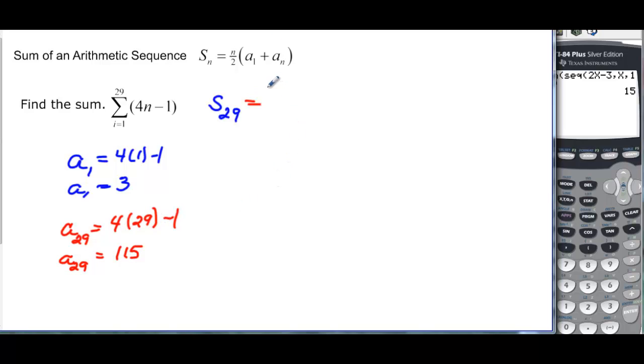So here we go. We have 29 terms and we're going to divide that by 2, and then we're going to add up our a_1 which is 3 plus our a_n which we said was 115. So we have 29 over 2 times 118. And if I simplify this a little bit so I can get rid of my fraction.